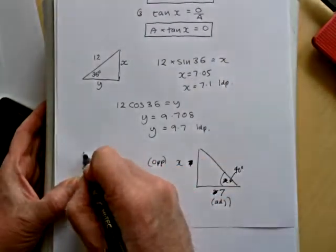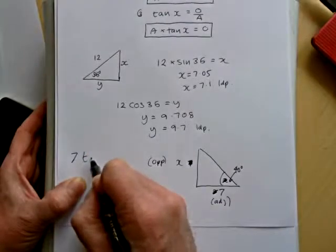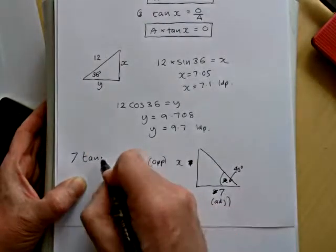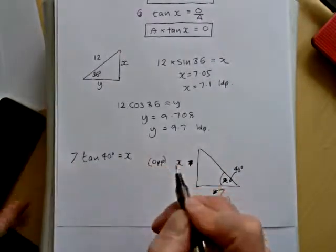So it's the tan formula. So the adjacent side is 7, so 7 tan 40 degrees will equal the opposite side, which I'll put as x. I'll just bring the calculator out to do that.